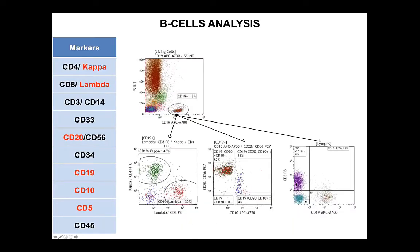For B cells, they are enumerated using CD19 and CD20, then the light chain is established using kappa and lambda. This is a normal bone marrow sample, and we can see the hematogones here represented by the dark blue events. We can also evaluate B cell maturation using CD10 versus CD20. The plasma cells are located in the lower left quadrant, CD10 and CD20 negative. An increased percentage of more than 2% will prompt additional investigation using the multiple myeloma tube.